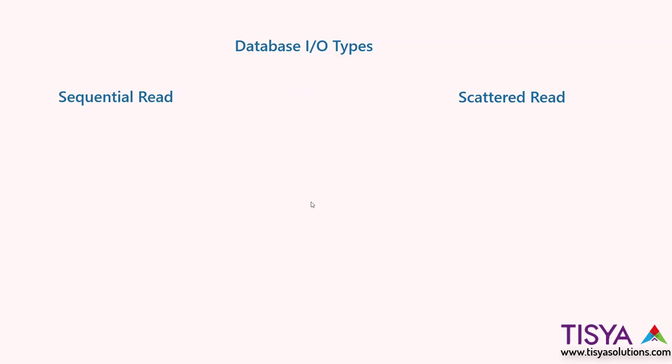In this video I will tell you about two prominent IO-related waits. To understand sequential read IO wait or scattered read IO wait, let's first understand what these two types of IO mean.